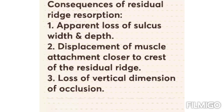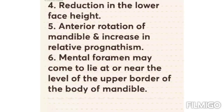The consequences of residual ridge resorption include: apparent loss of sulcus width and depth; displacement of muscle attachment closer to the crest of the residual ridge; and loss of vertical dimension of occlusion. The sulcus depth is lost and muscle attachment moves directly to the crest of the residual ridge because there is no sulcus width or depth.